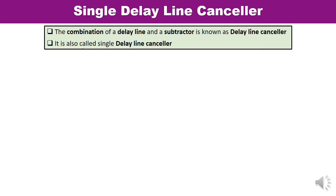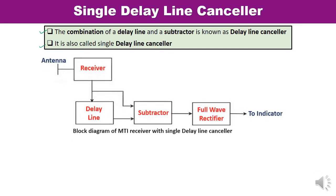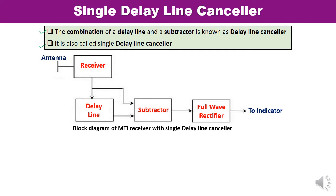Let us discuss the single delay line canceler first. The combination of a delay line and a subtractor is known as a delay line canceler, also called a single delay line canceler because only one element is used. Here you can see the block diagram of an MTI receiver with a single delay line canceler, using only one delay line.